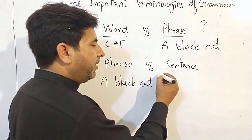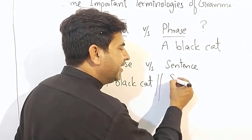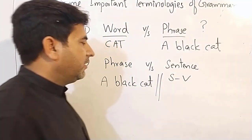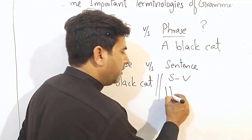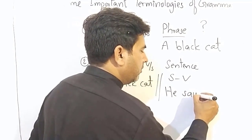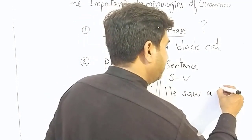Ab isko sentence mein hum karte hai. Sentence kaise banega? Isse hum agar sentence banayenge, to we have to add subject and verb. Jaise hi sau aag black cat.